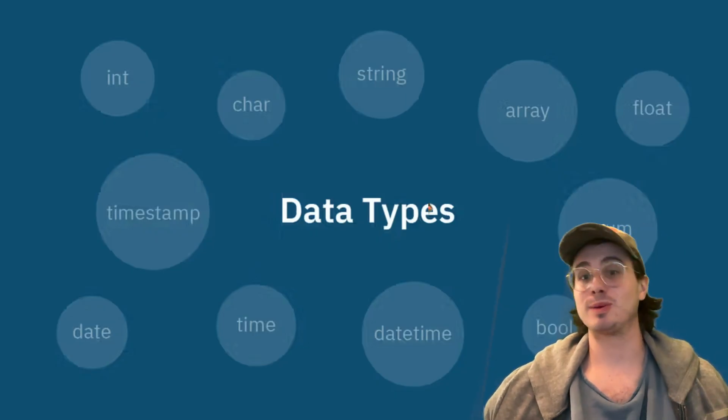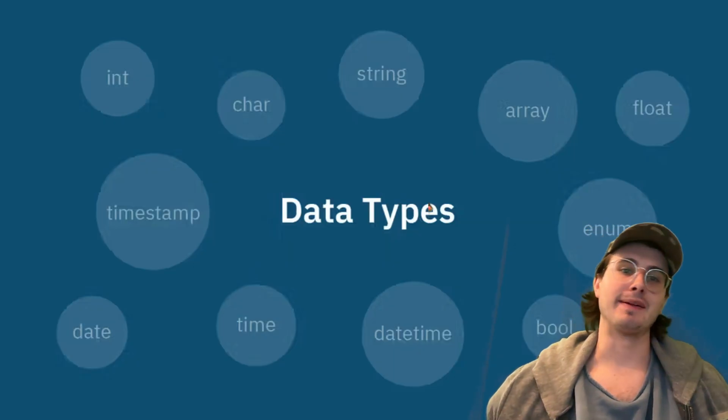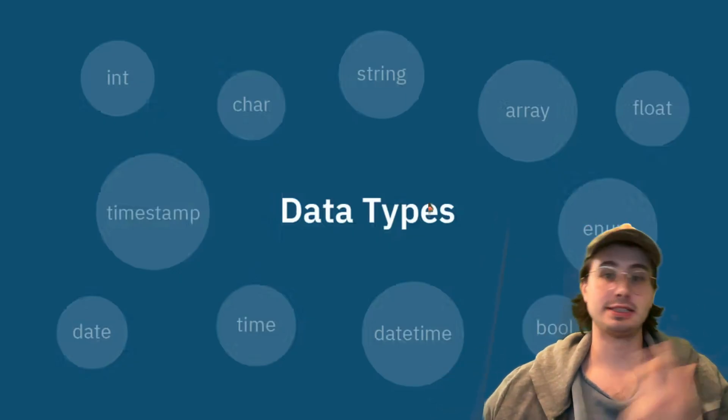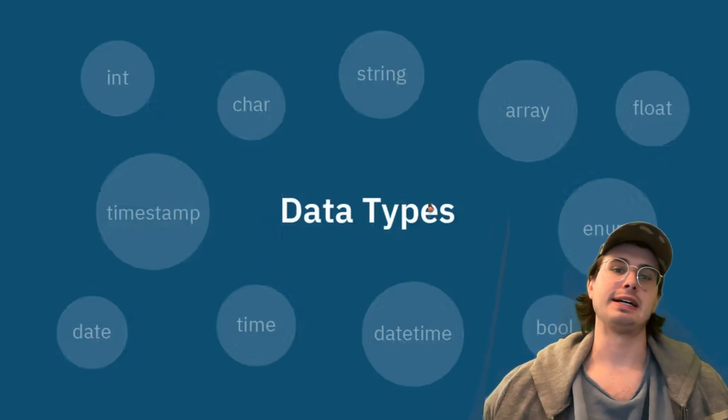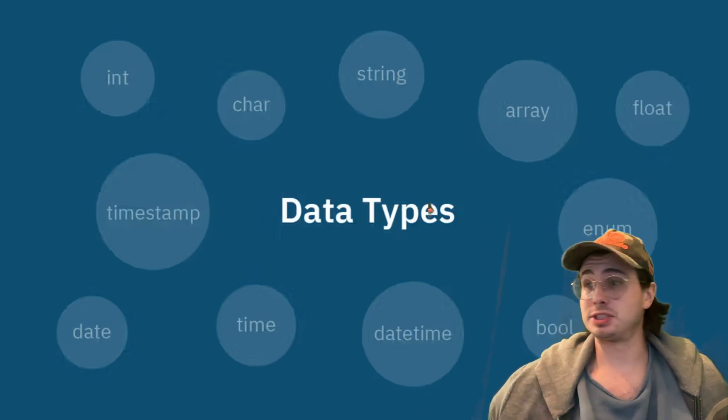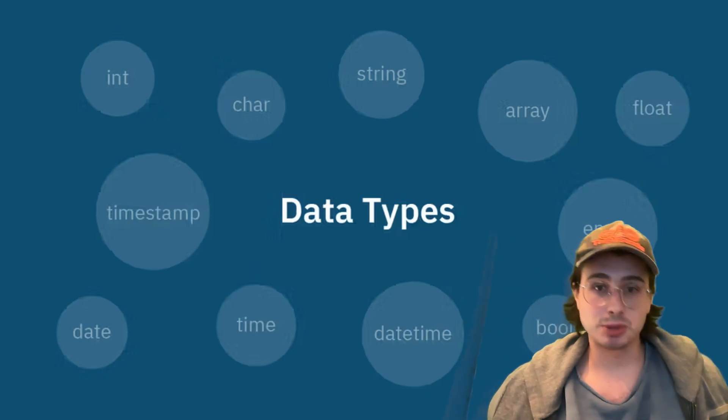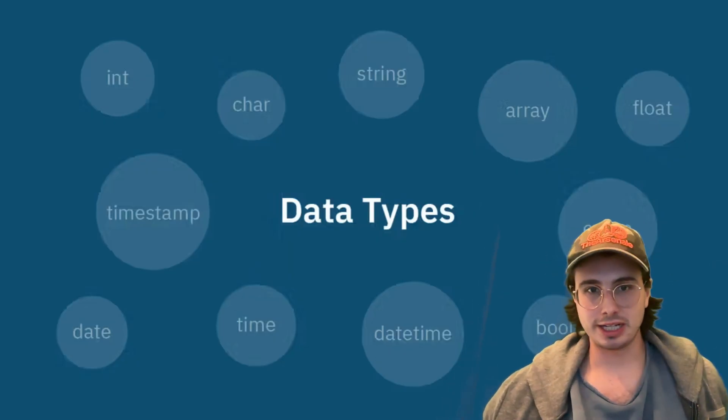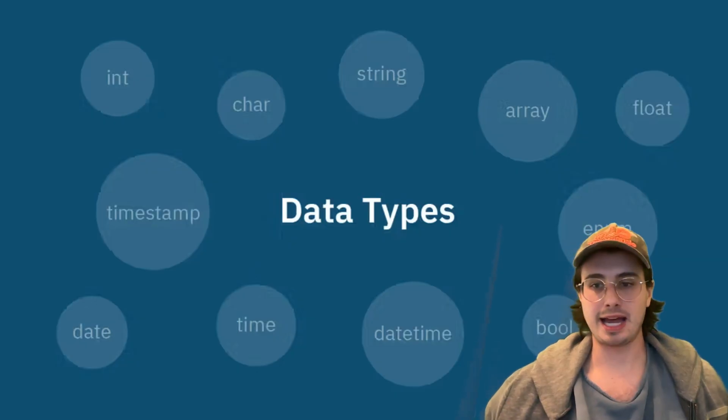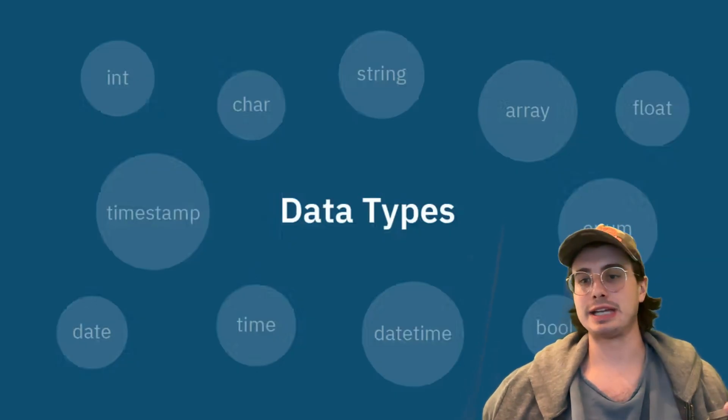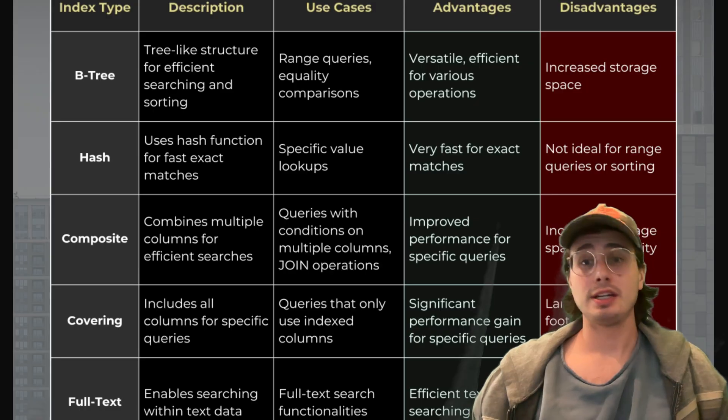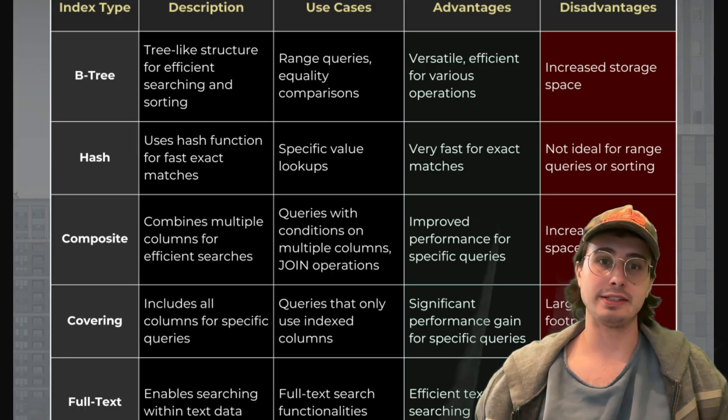You probably don't need bigint for customer ID for a small town bake shop. Know the difference between varchar versus char based on data variability, different numeric types based on precision requirements, and for temporal data use date, time, and datetime types because they contain all the logic around dates rather than storing as raw numbers.